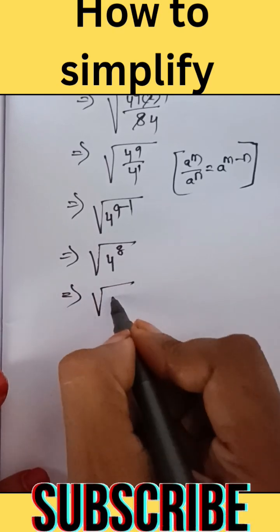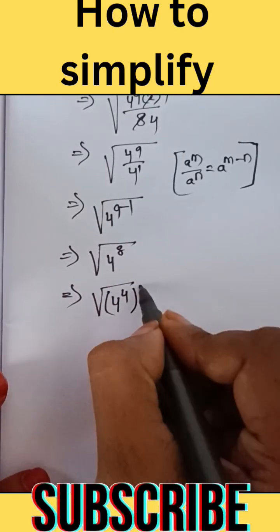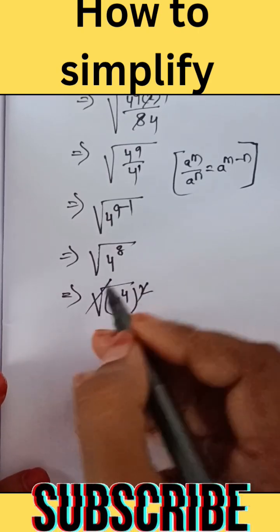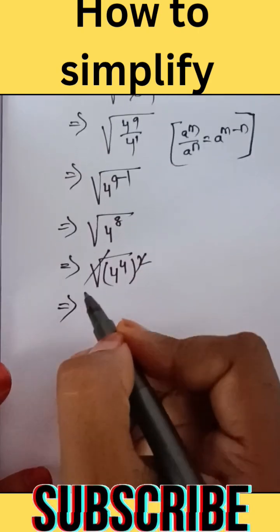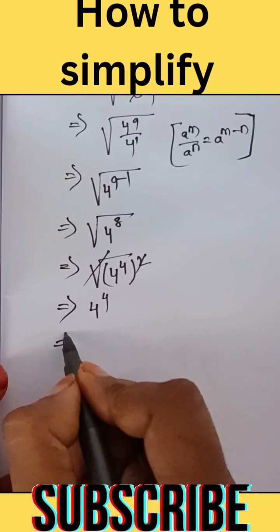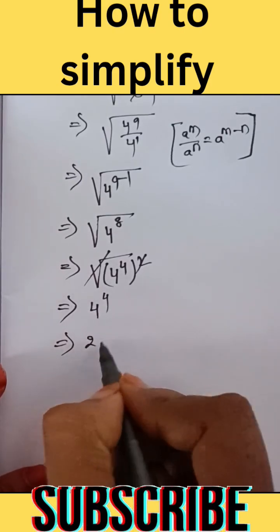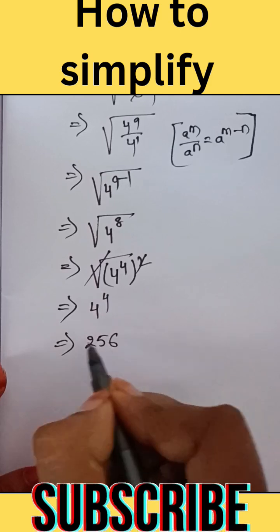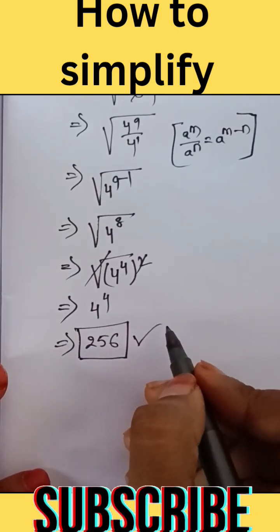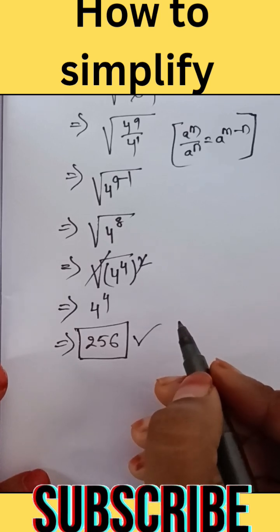Square root of 4 power of 8 equals square root of 4 power of 4, whole square, which equals 4 power of 4. The value of 4 power of 4 is 256. So the answer is 256. Please subscribe, like, share, and comment below.